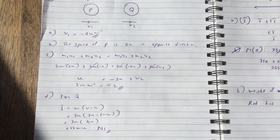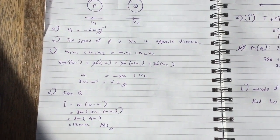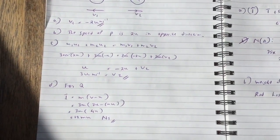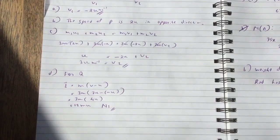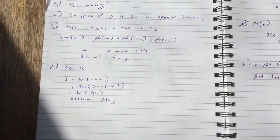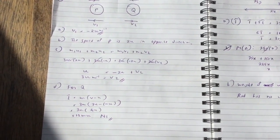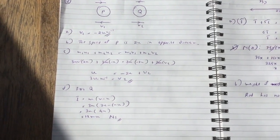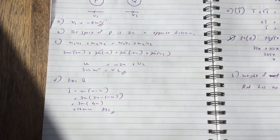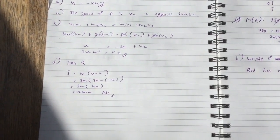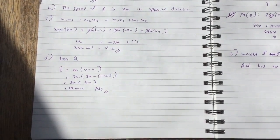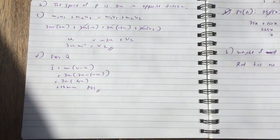So impulse on Q equals I equals M bracket v minus u. Or you could write Mv minus mu, it's the same thing. So I've substituted the values in. Always remember the initial speed is in the opposite direction. So when you subtract, it should be 3u minus minus u, which makes it 4u. And the total impulse is 12mu Newton seconds.